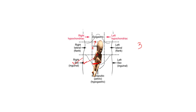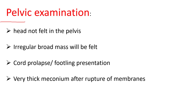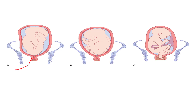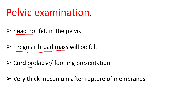Three important points on abdominal examination: the head is felt in the left or right hypochondrium; the presenting part is broad and irregular because the head is not present; and the fetal heart rate is heard above the umbilicus rather than below. On pelvic examination, you will not feel the head or vertex. Instead, you feel a broad irregular mass, and you may also feel the foot, umbilical cord, and thick meconium after rupture of membranes — a very important sign of breech presentation.